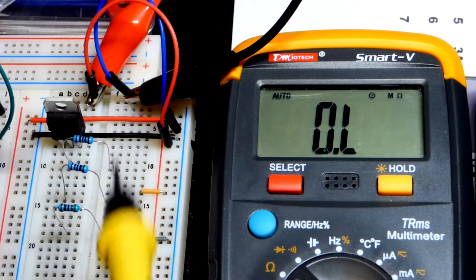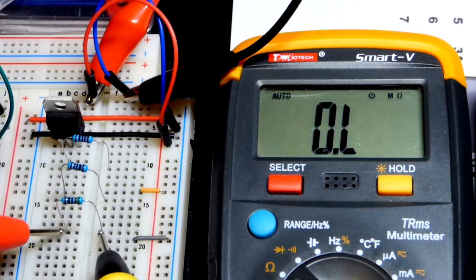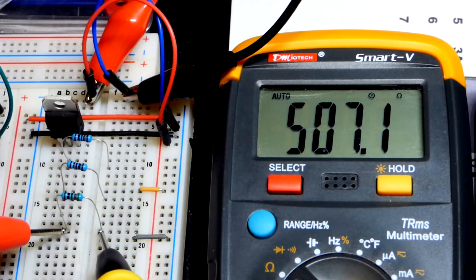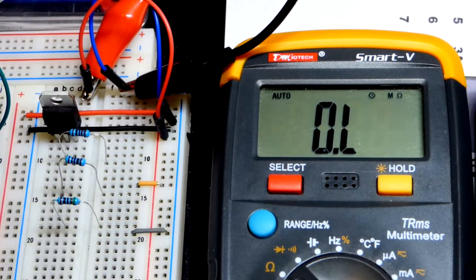That's 1 kilo ohm, 1,000 ohms. This is a 510 ohm. You can see the meter is showing 507 right there. So it has half the resistance. That is the main thing.